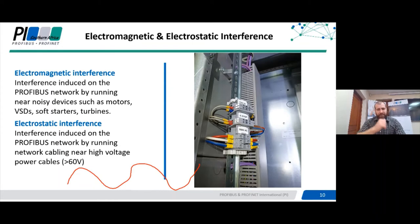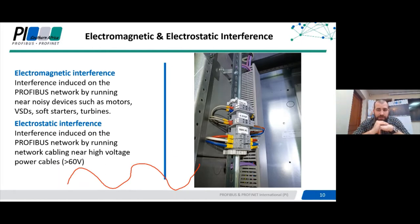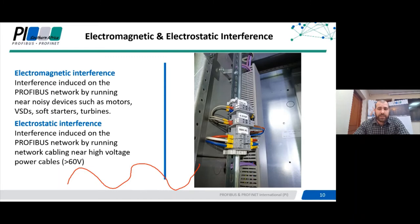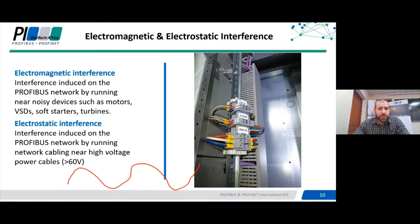Once you've identified EMI interference in your network, a simple fix is to firstly, where practically possible, move your Profibus cable away from the source of interference — at least 20 to 30 centimeters away from any high voltage cables. By high voltage I mean anything typically above 100 volts AC or DC. There is a guideline depending on voltages: above 400 volts requires over 20 centimeters separation, below 400 volts is normally about 10 centimeters. Avoid running over any VSDs within panels where not completely necessary.